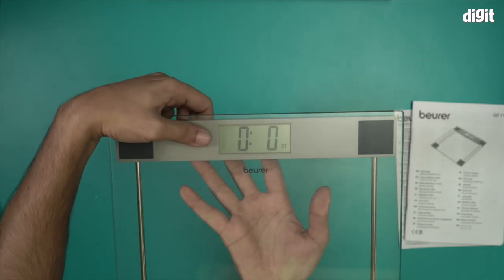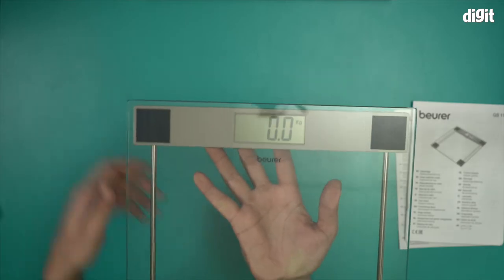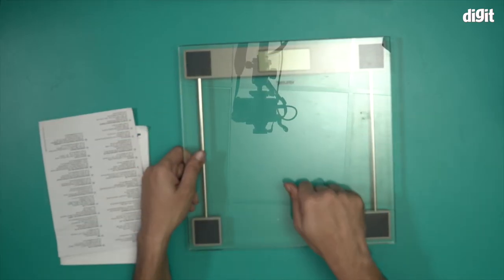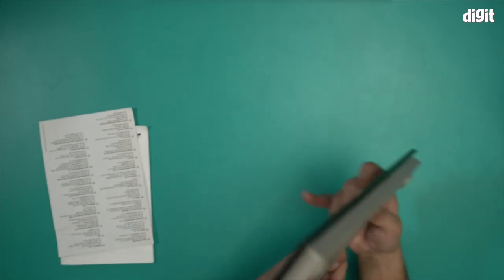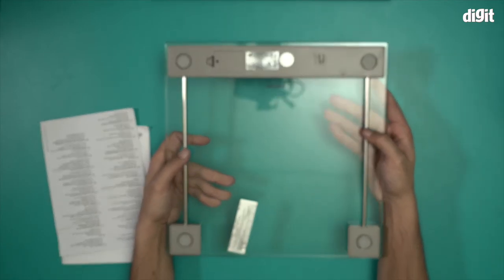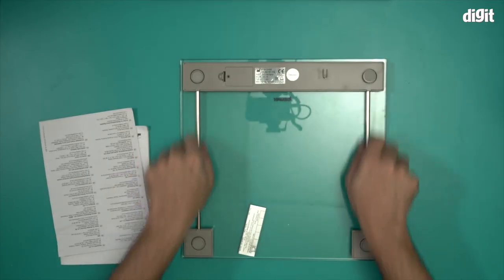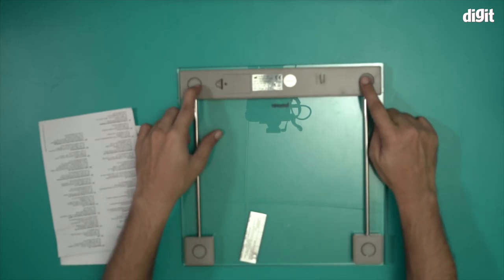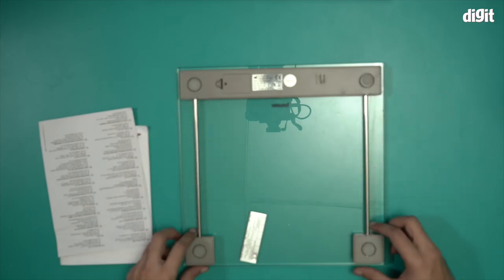Once again, this bathroom scale has 2.1 centimeter tempered glass on top. Underneath are these metallic beams holding this thing together. You'll also find four anti-slip stops right here.